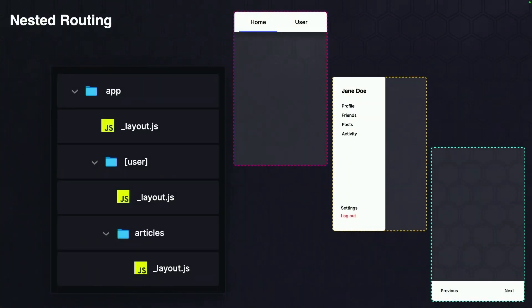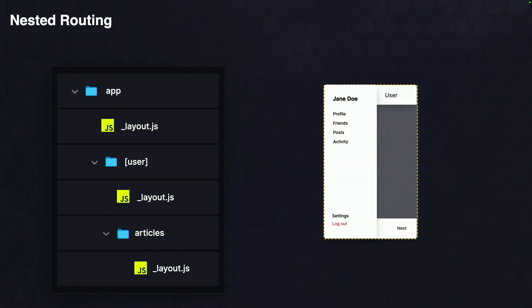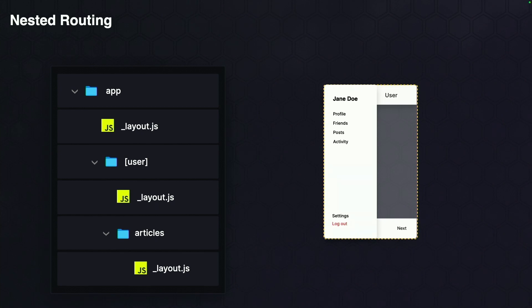It's also a nested routing system, enabling you to organize routes into folders to establish shared UI like tab bars and headers. And it uses native primitives, like UI navigation controller on Apple devices, to ensure transitions feel truly native to the platform. We actually built the React Conf app with Expo Router, and it feels pretty native.